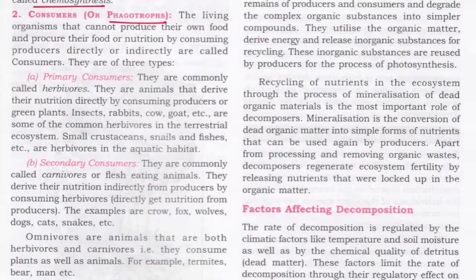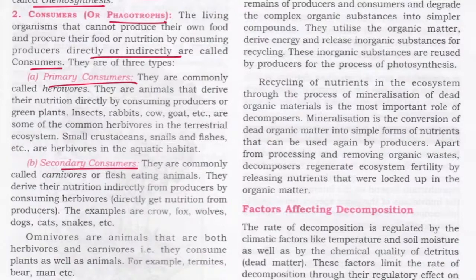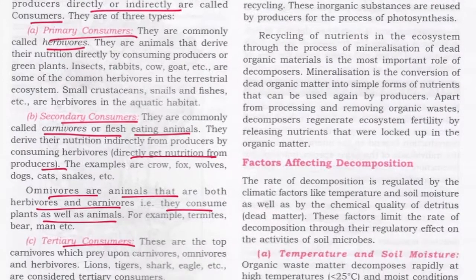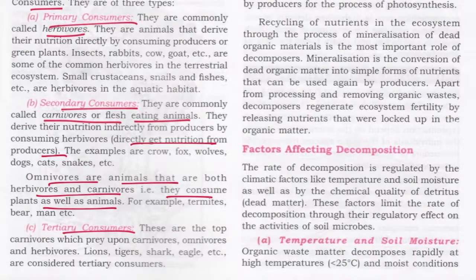Heterotrophs are of two types: consumers and decomposers. Each biotic community is made up of producers, consumers, and decomposers. Producers are green autotrophic plants that synthesize carbohydrates, proteins, fats, and amino acids. Consumers, also called phagotrophs, depend on producers directly or indirectly. There are three types: primary consumers, which are mostly herbivores that depend on green plants; secondary consumers, which are carnivores that depend on herbivores; and tertiary consumers, which are top carnivores that prey on carnivores, omnivores, and herbivores — examples include lion, tiger, and shark.